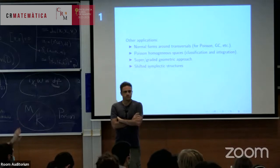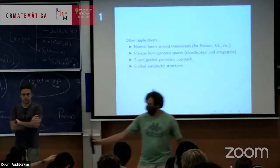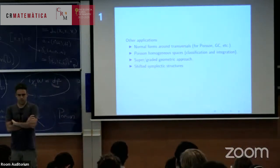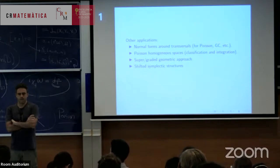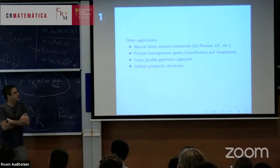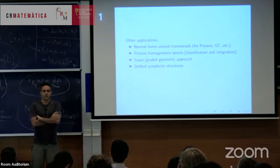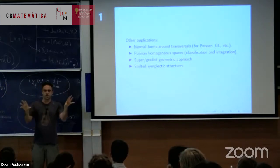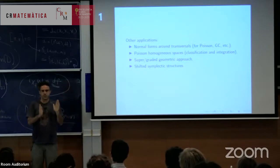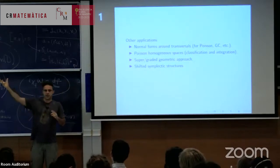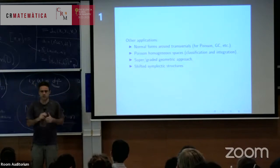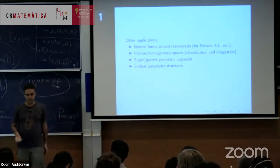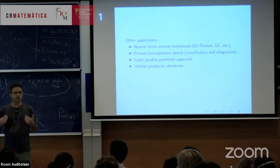There were questions about related brackets. When you restrict the Courant or Courant-Dorfman bracket to Lagrangian sub-bundles, the non-skew-symmetric becomes skew-symmetric and the skew-symmetric that didn't satisfy Jacobi does satisfy Jacobi. So they coincide on Lagrangian sub-bundles and lead to the same theory of Dirac structures.